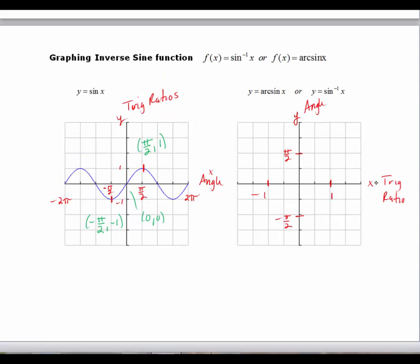So in my new graph, the x-axis is going to be the trig ratio, which used to be the output for the original graph. The y-axis is now going to be the angle. We're just swapping our x's and y's, so we're changing the x-axis and the y-axis. We're basically exchanging what those mean. And we're going to exchange these three ordered pairs, the x's and the y's. So my three new ordered pairs are going to be 1, pi over 2, 0, 0, and negative 1, negative pi over 2. And I'm going to graph those.